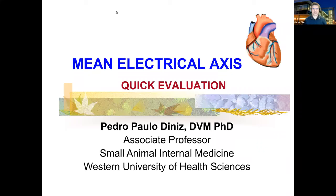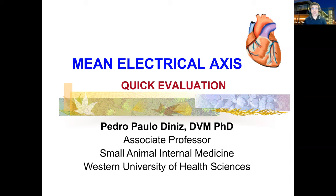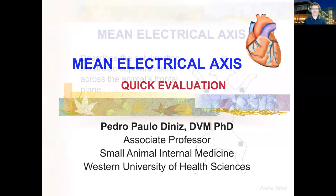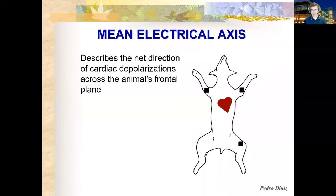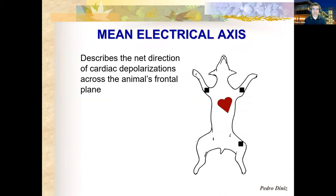Hi, I'm Dr. Denis. In this video we're going to look into how to calculate the mean electrical axis on ECGs. The mean electrical axis is like a net direction of the cardiac depolarizations across the heart — in other words, the direction towards which the summation of all depolarizations of the cardiac cells goes.